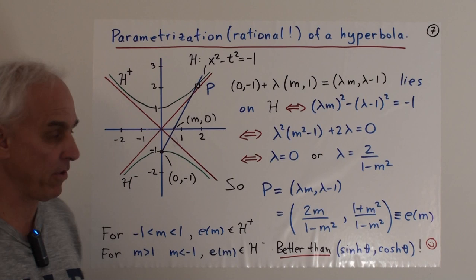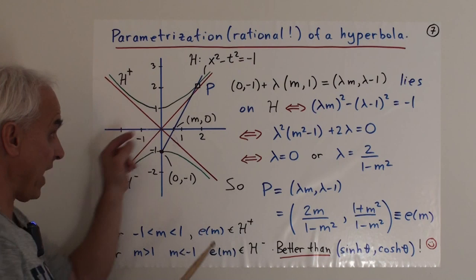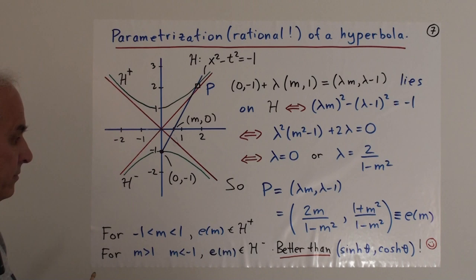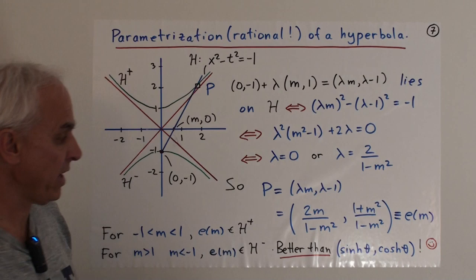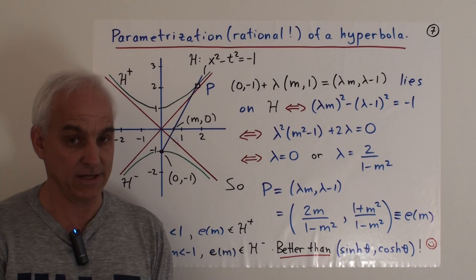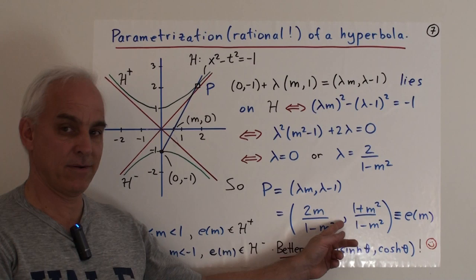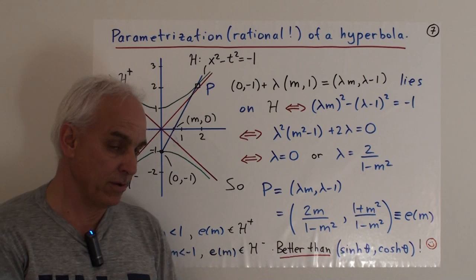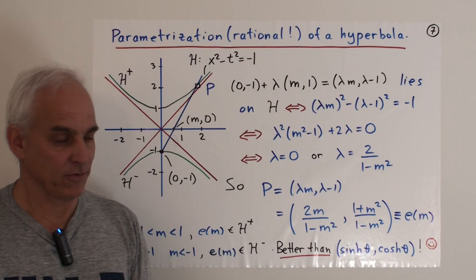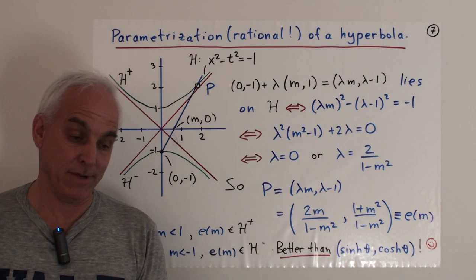Let's call that E(M) — that's a point on the hyperbola. The hyperbola has two branches: the top branch H+ and the bottom branch H-. If M is between -1 and 1, then the line meets the top branch. If M is outside that range, it meets the lower branch. This is a parameterization of x² - t² = -1. For most applications and especially in relativistic physics, this is far superior to the sinh θ, cosh θ that you find in many textbooks. If you're teaching physics, think about switching over — it's a very good step because it's rational: no transcendental functions required, just rational expressions involving high school operations.